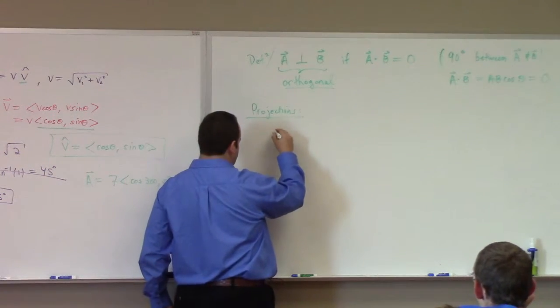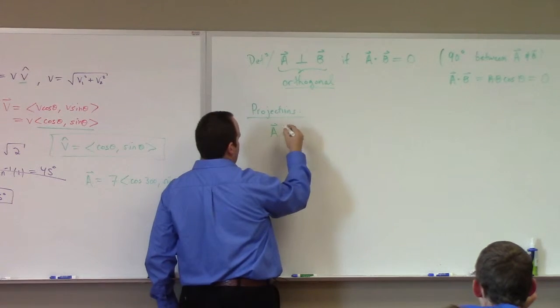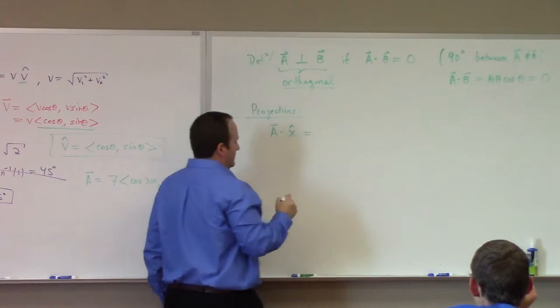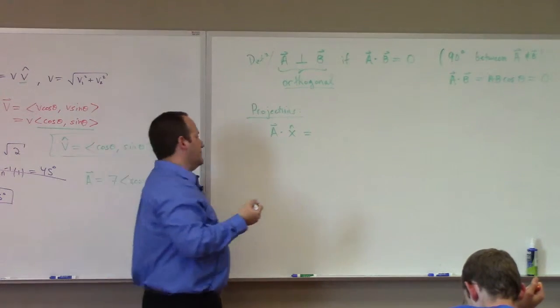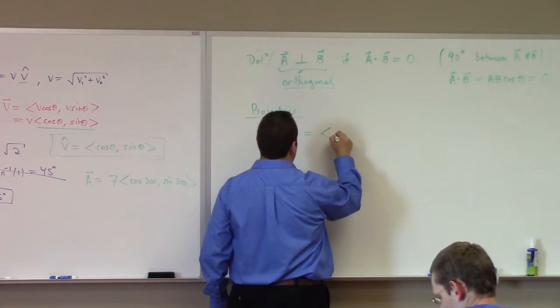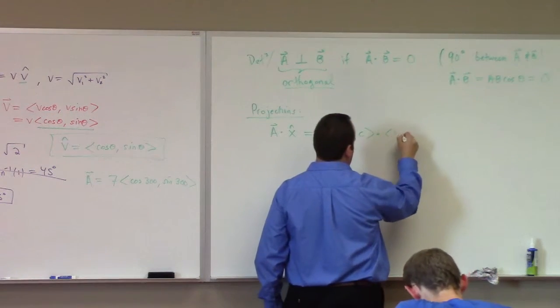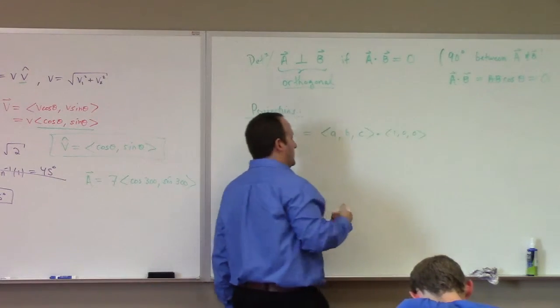So, there's probably a better way to say that, but if I take a dot x hat, what happens? And I'll be three-dimensional, I guess. How about that? Suppose I've got a, b, c. So, a, b, c dot what? One, zero, zero, right? What do you get?